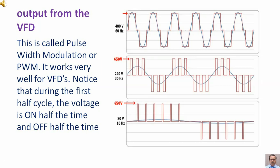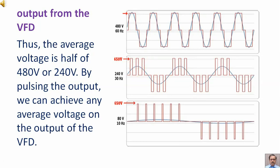This is called pulse width modulation or PWM. It works very well for VFDs. Notice that during the first half cycle, the voltage is on half the time and off half the time. Thus the average voltage is half of 480 volts or 240 volts. By pulsing the output, we can achieve any average voltage on the output of the VFD.